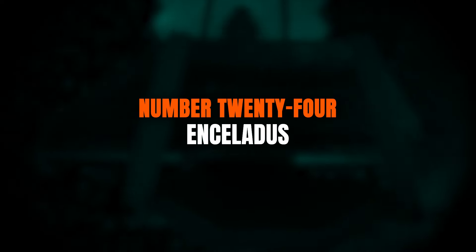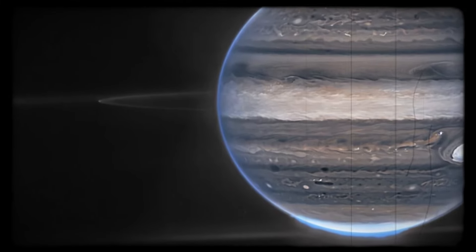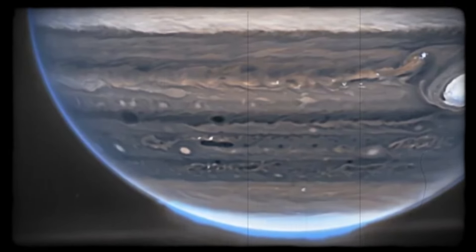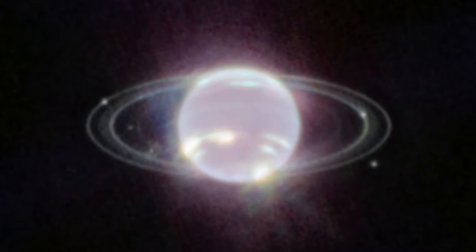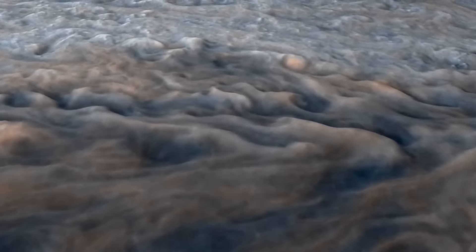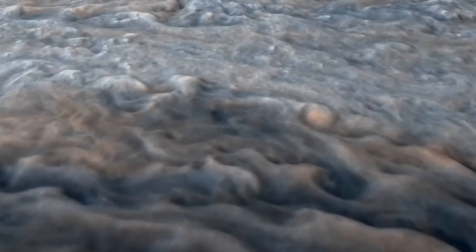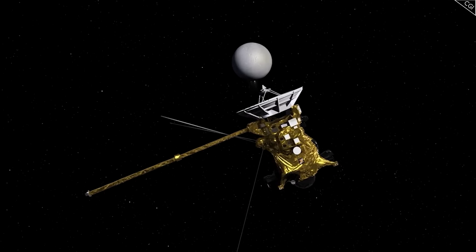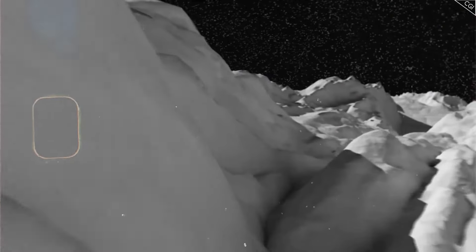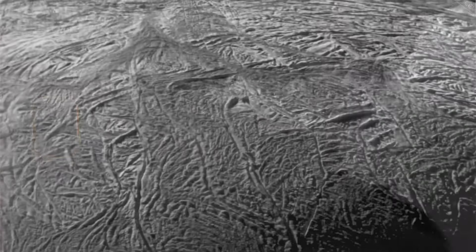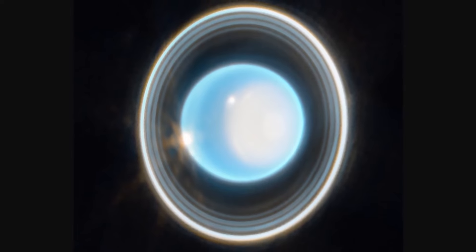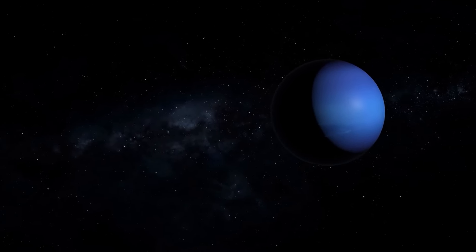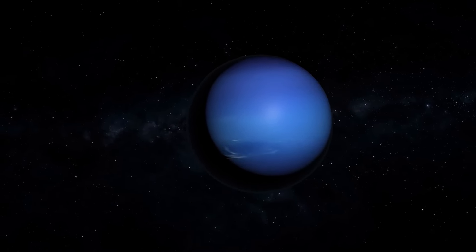Number 24. Enceladus. Beneath the icy crust of Enceladus lies a liquid water ocean, kept warm by the gravitational pull of Saturn. This subsurface ocean makes Enceladus one of the prime candidates in the search for life. And using the JWST, astronomers were able to spot a plume of water jetting out from a vent in the ice, a phenomenon known as a cryovolcano or an ice volcano. This spectacular event reveals the dynamic nature of Enceladus and offers a unique opportunity to study its subsurface ocean.